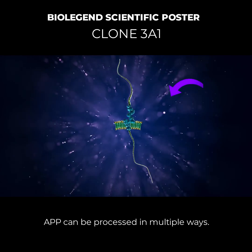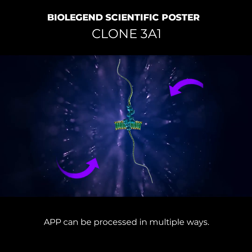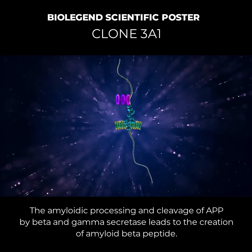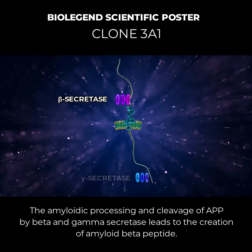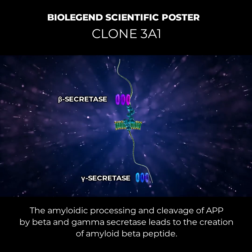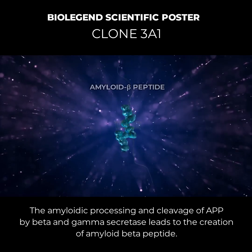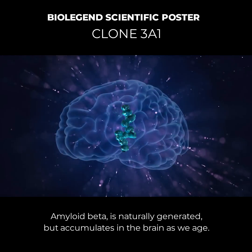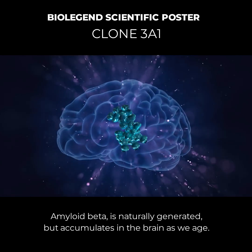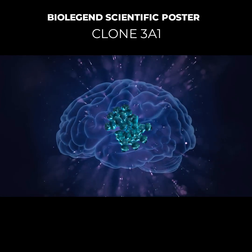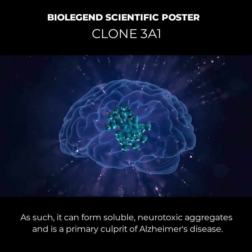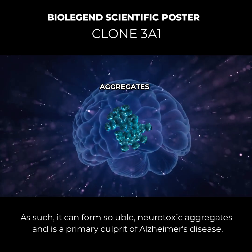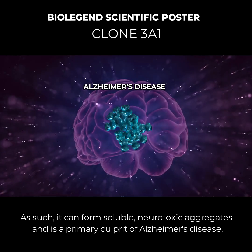APP can be processed in multiple ways. The amyloidic processing and cleavage of APP by beta and gamma secretase leads to the creation of amyloid beta peptide. Amyloid beta is naturally generated, but accumulates in the brain as we age, and can form soluble neurotoxic aggregates and is a primary culprit of Alzheimer's disease.